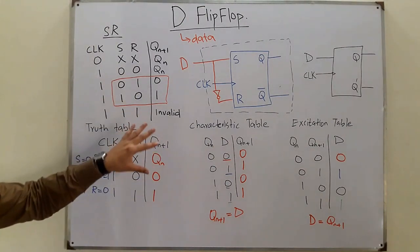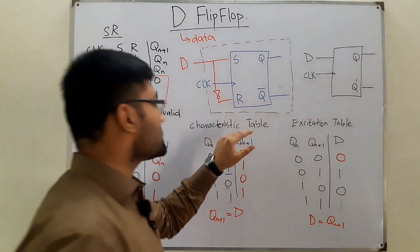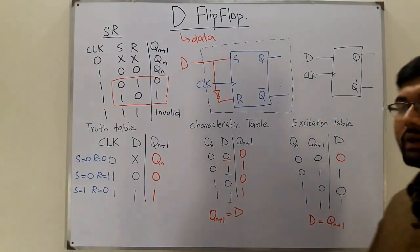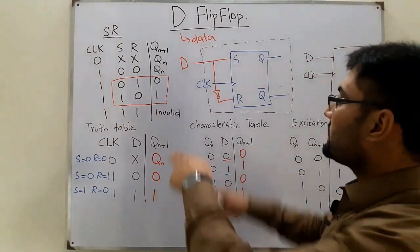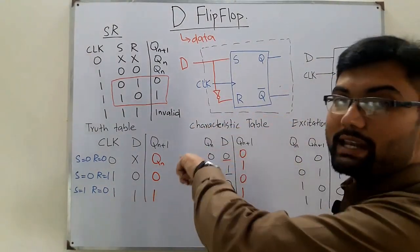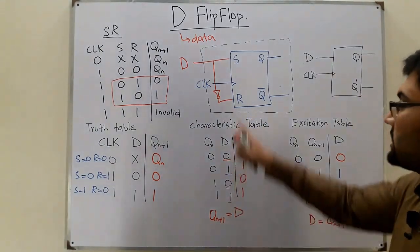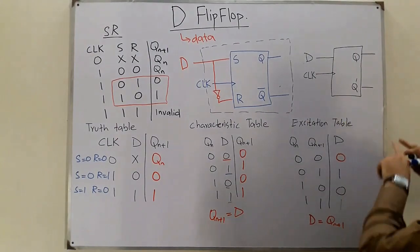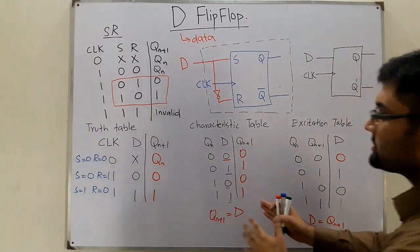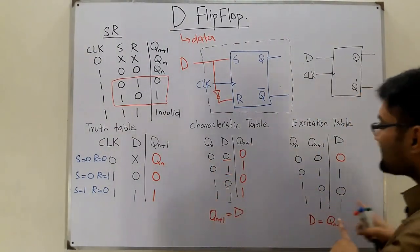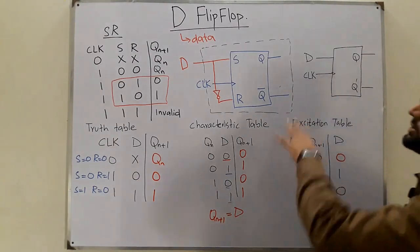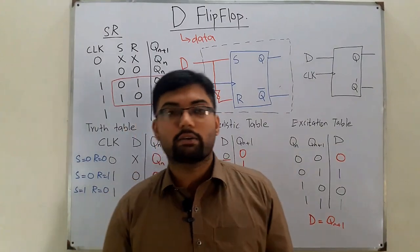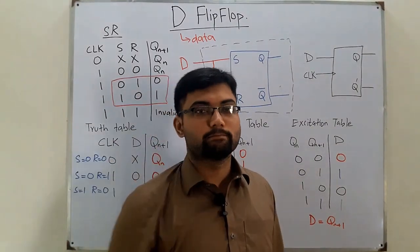To summarize: instead of providing separate inputs at both terminals S and R, since they are always inverted, we provide one input D and have the other inverted internally using a NOT gate. This is the internal circuitry of the D flip-flop. We then derived the truth table, the characteristic table from the truth table, and the excitation table from the characteristic table. See you in the next lecture — take care of yourselves and everyone around you, goodbye.